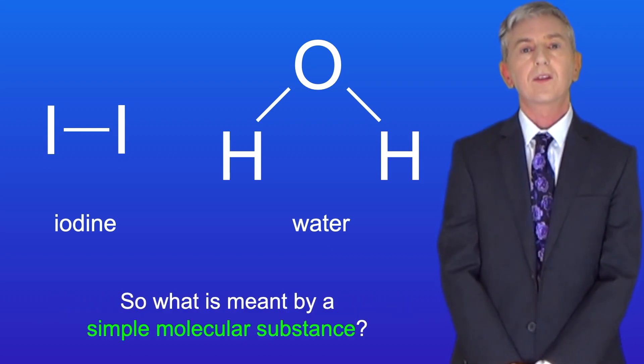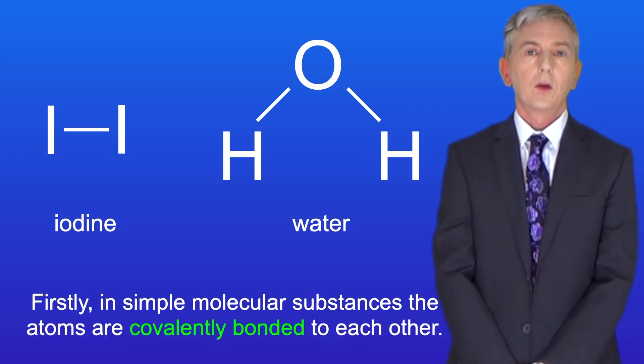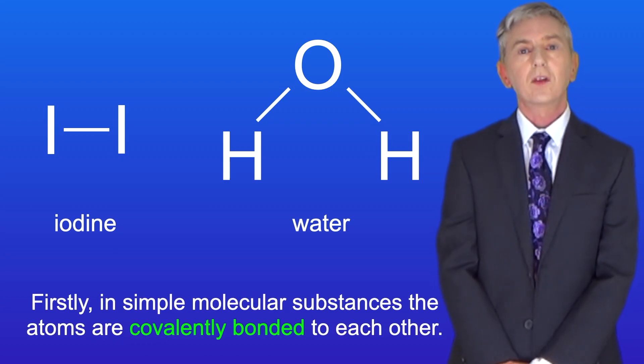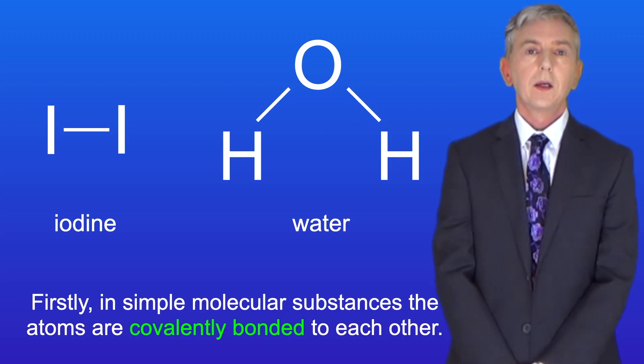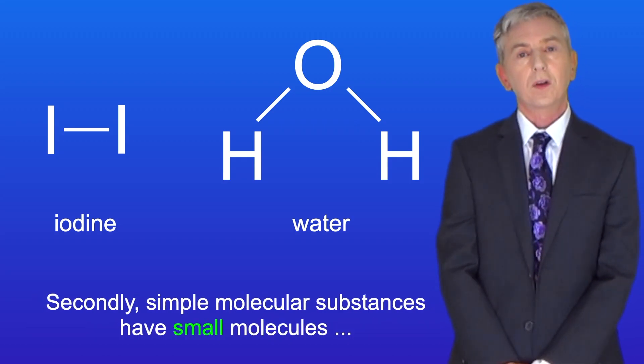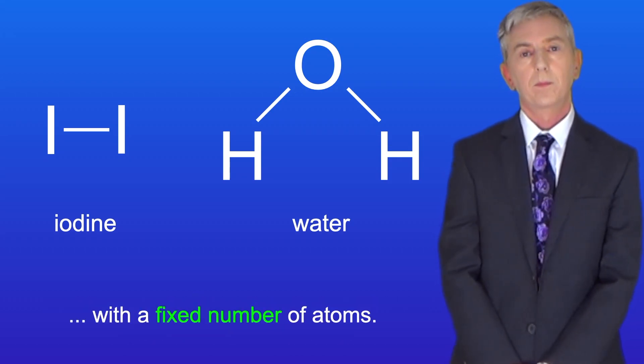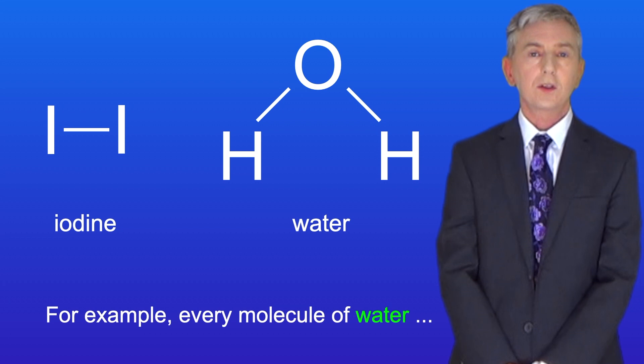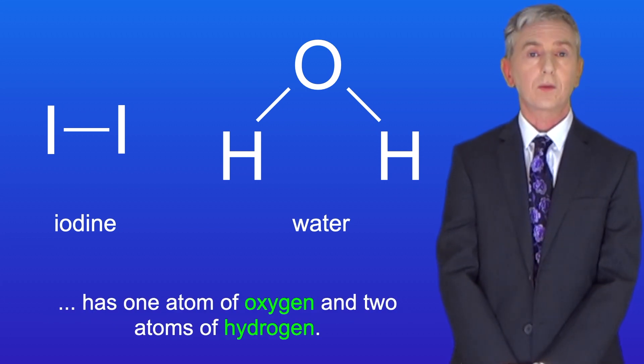So what's meant by a simple molecular substance? Well firstly, in simple molecular substances the atoms are covalently bonded to each other. Secondly, simple molecular substances have got small molecules with a fixed number of atoms. For example, every molecule of water has one atom of oxygen and two atoms of hydrogen.